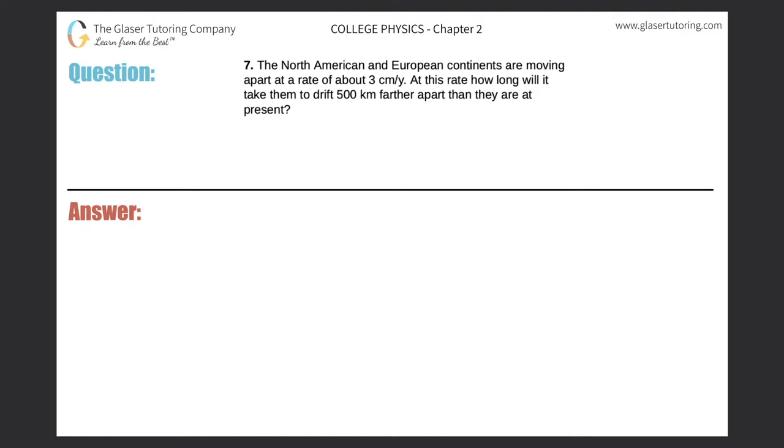Number seven. The North American and European continents are moving apart at a rate of about three centimeters per year. At this rate, how long will it take them to drift 500 kilometers further apart than they are at present?